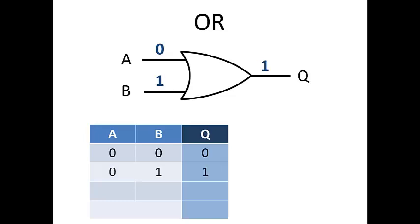So that means that 0, 1 will give us a 1 output. 1, 0 will give us a 1 output. And 1, 1 will give us a 1 output. We write this in Boolean equation form as Q equals A plus B. Plus means OR. Q equals A or B.